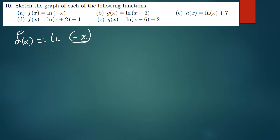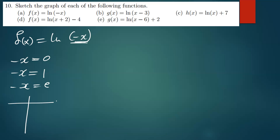What you need to do is take whatever is in the brackets and equate it first to zero, then to one, and thirdly to e. The reason we do this is to find the x-values that give us the direction of the sketch.